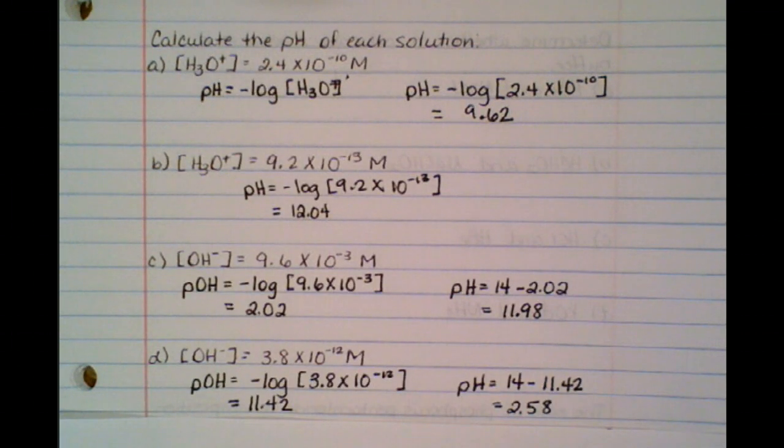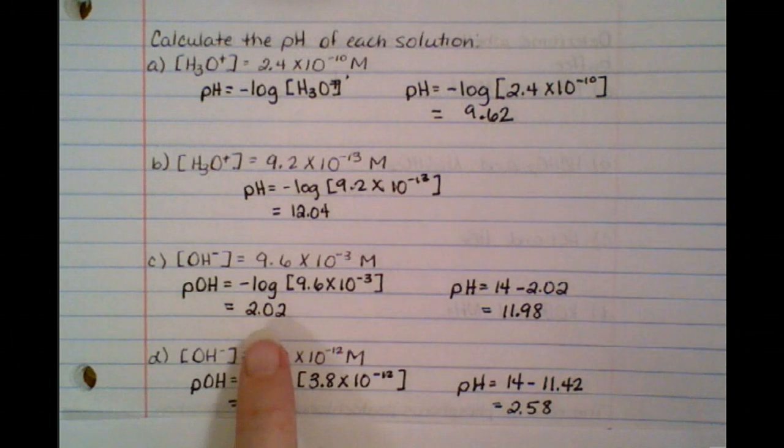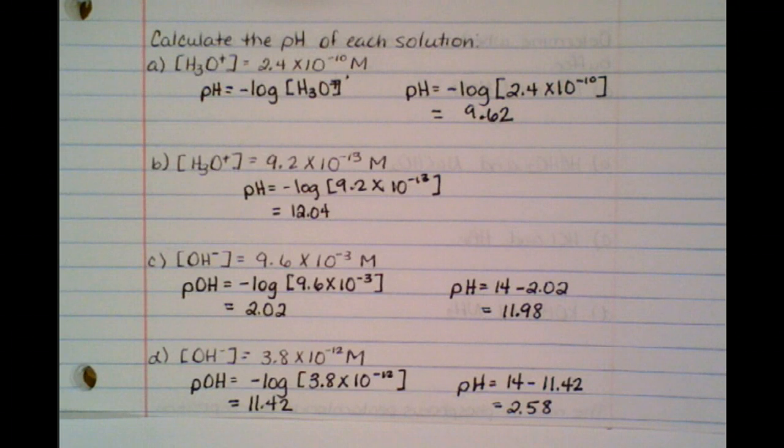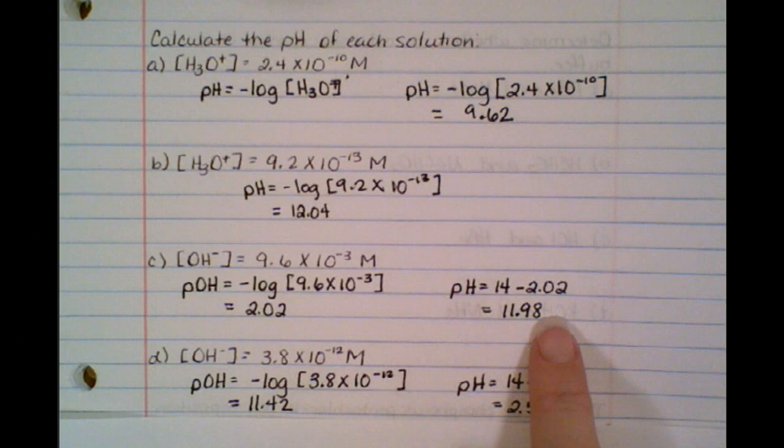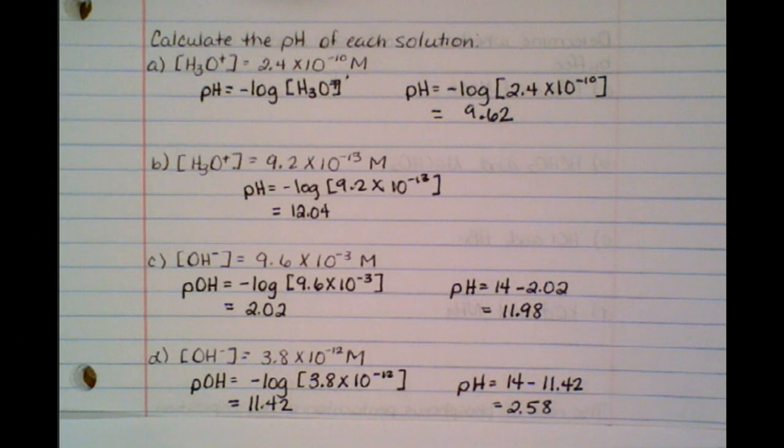So when you looked at C and D, you should have noticed that these were no longer a hydronium concentration, but rather an OH concentration. So when you actually calculate the negative log of the concentration, you're getting a pOH value. So if you got the 2.02 and you were done, it's just because I kind of tricked you, and I'm really sorry about that. But you actually need to subtract it from 14 to find the actual pH value. So D is done exactly the same. A little bit of trickery, but it's mainly to make sure you're paying attention.